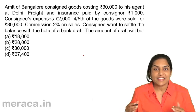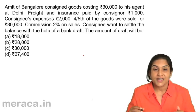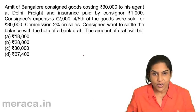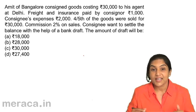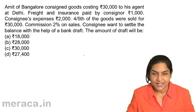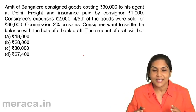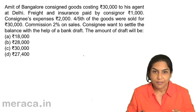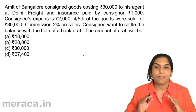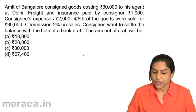The consignee receives goods, incurs expenses, and is entitled to a commission. The consignee affects sales. From the sale proceeds, the consignee will reduce the expenses, reduce the commission, and the balance should be due to the consigner. So let us just see what should be the balance of the draft.